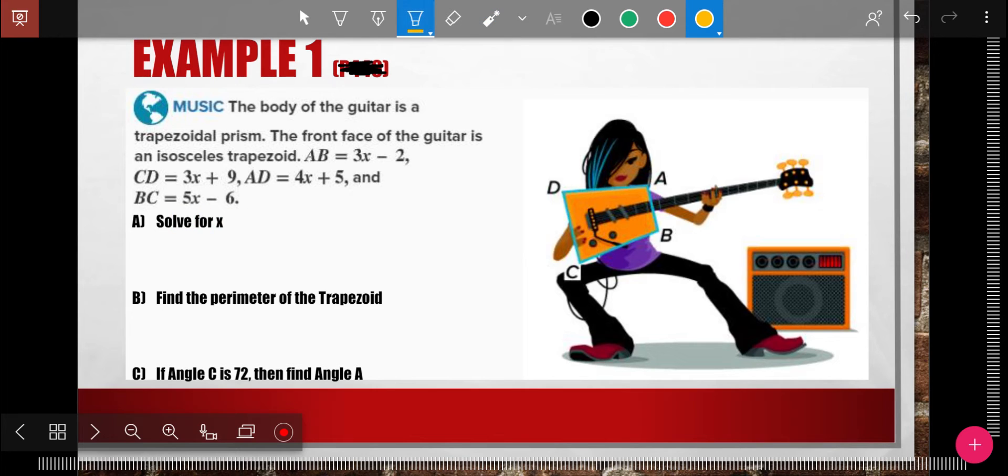If it's isosceles, then I know the legs. AD here is a leg. And BC here is a leg. I know the legs are congruent. That's why it's isosceles. So AD and BC are congruent.